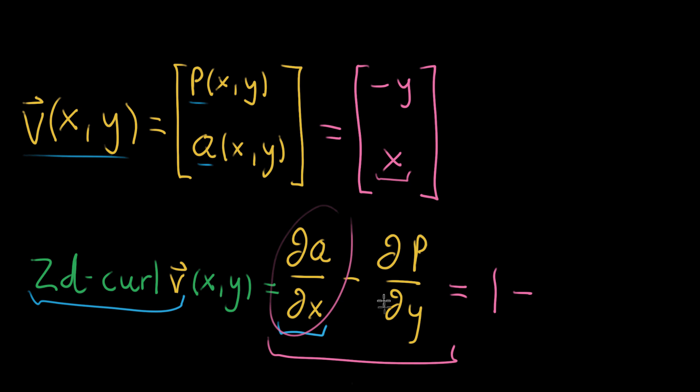And then we subtract off the partial of P with respect to y, which up here is negative 1, because P is just equal to negative y.